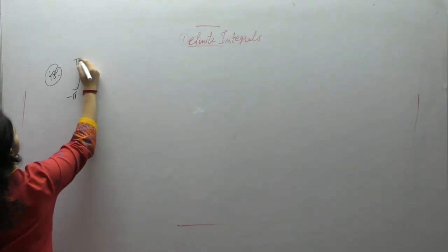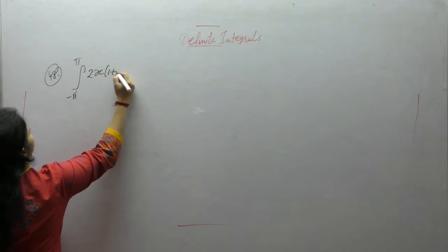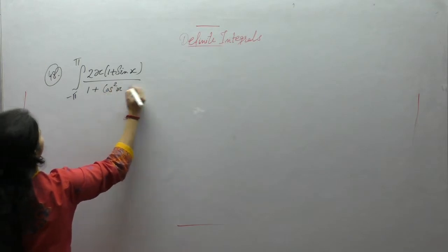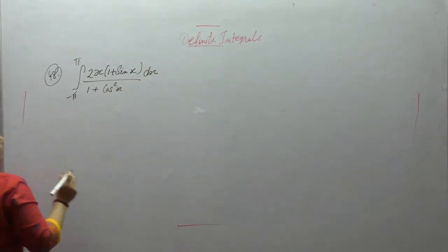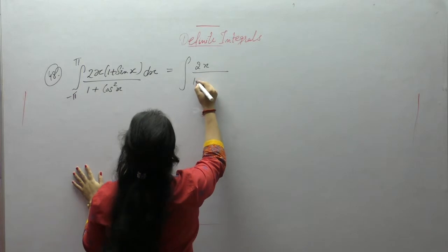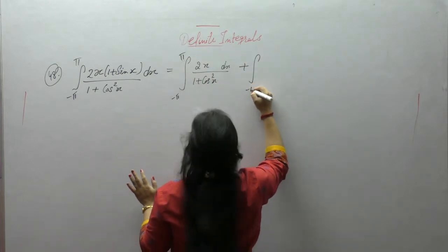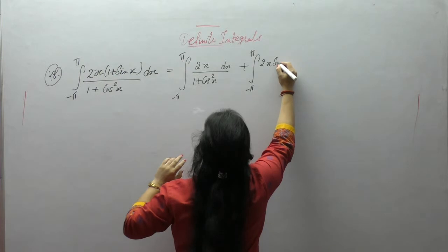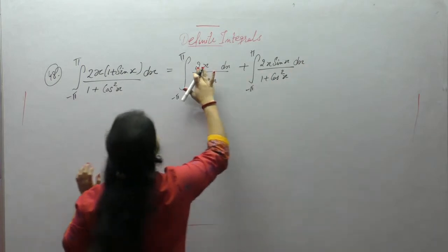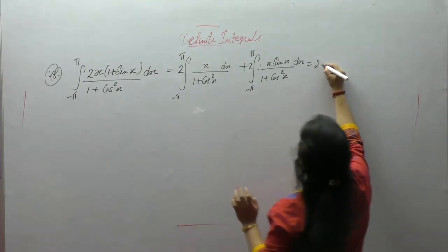Evaluate the integral from minus pi to pi of 2x(1 + sinx) upon (1 + cos²x) dx. First, separate the terms: I1 = integral of 2x upon (1 + cos²x) dx, and I2 = integral of 2x sinx upon (1 + cos²x) dx. Let these be I1 and I2 respectively.